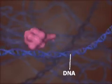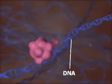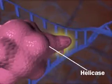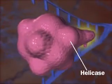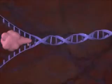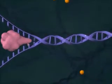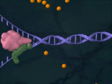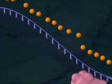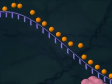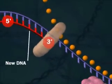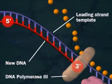When DNA replicates, its strands are separated by the enzyme helicase. Single-stranded DNA binding proteins keep the strands from re-annealing. One DNA strand encodes the leading strand, which forms from its 5' to its 3' end using DNA polymerase 3.